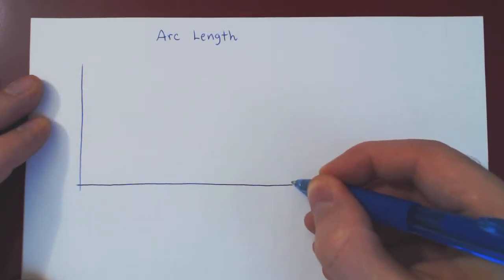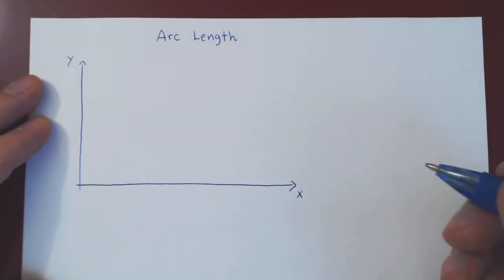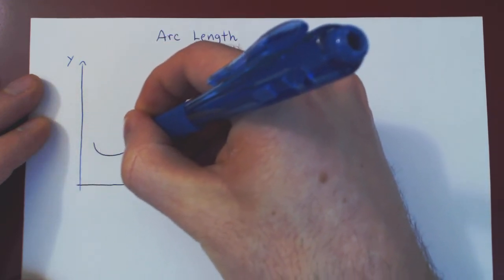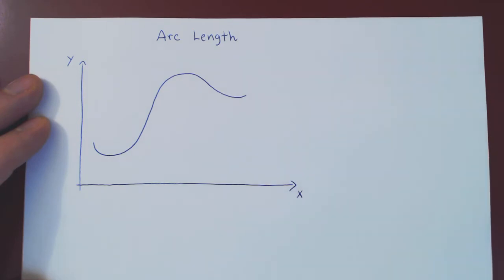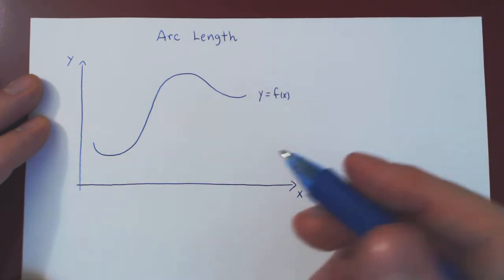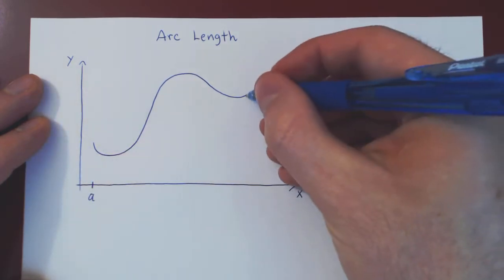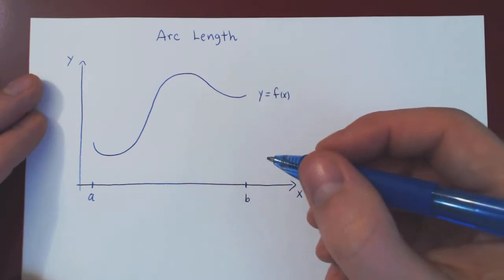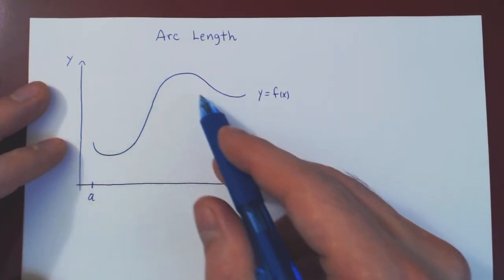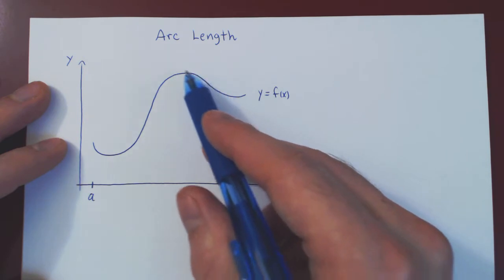Suppose we have the following problem. We're given a function in the xy-plane, and the graph looks something like this — this is the graph of y equals f of x. We are asking for the length of this curve between two x values: from x equals a up to x equals b.